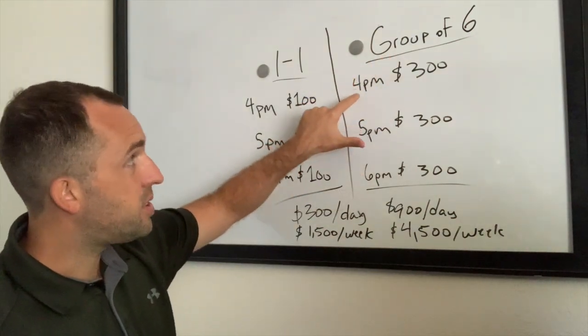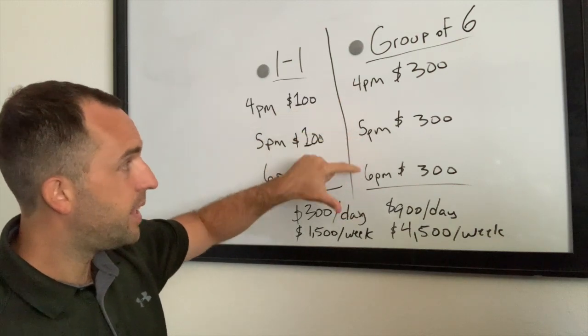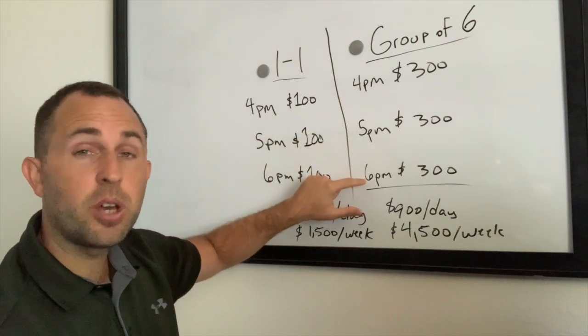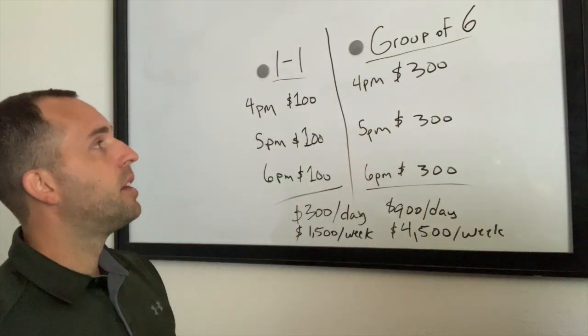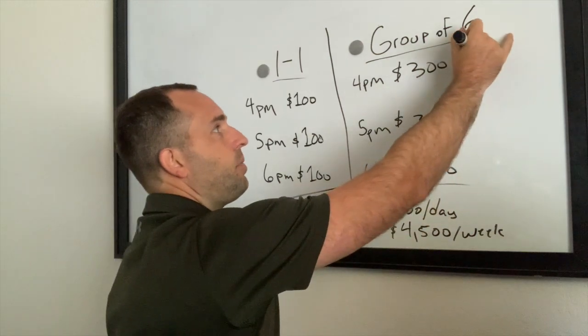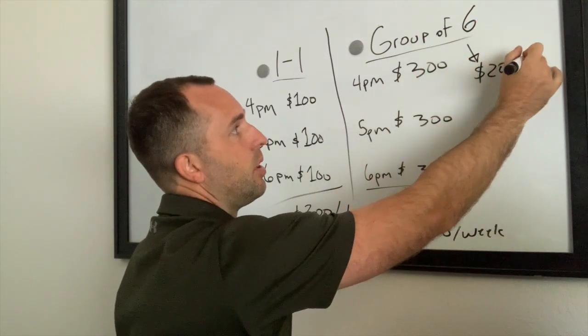So this is if you have a group of six here, a group of six here, a group of six here. So six, twelve, eighteen clients that are coming in one day to meet with you. And the way I have these numbers set up is if each client is paying $200 per month.